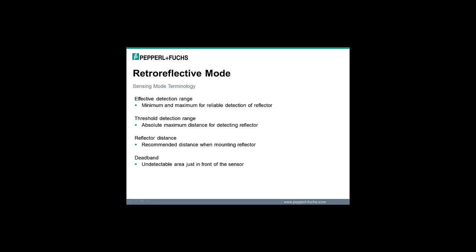Common terms used with retroreflective sensors: effective detection range is the minimum and maximum distance for reliable and consistent detection of a reference reflector — the recommended range that the sensor and reflector should operate within. The sensor's threshold detection range is the absolute maximum distance for detection of a reference reflector; operating in the threshold detection range is not recommended as many external factors can cause the sensor to no longer detect the reflector. The reflector distance is the recommended minimum and maximum distance from the sensor face when mounting a reflector. The deadband is the area just in front of the sensor face in which the sensor cannot reliably detect the reflector because of the emitter-receiver separation and the angle at which light is reflected back.